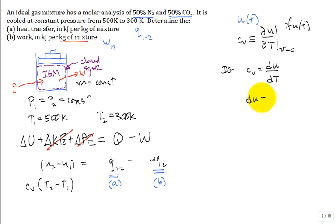If I want to get a change in U, it's just C sub V times change in T for an ideal gas mixture. And that's what we just wrote right here. I need a change in U, C sub V times change in T. True? All right.